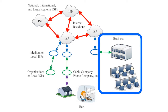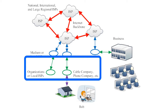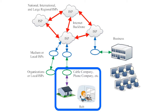The green arrows represent the connection between the medium ISPs and an organization further down the hierarchy. As we can see in the illustration, a business with its own private internal network might connect its many users directly to one of these medium-sized ISPs. However, a residential user might connect to the medium ISPs through an even smaller local ISP, often controlled by a local cable company or a local phone company.